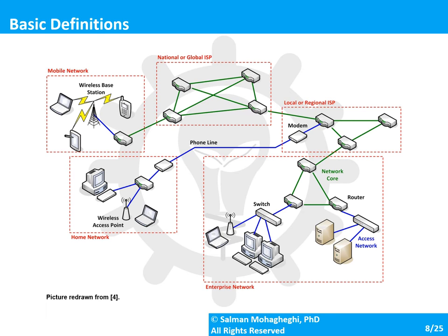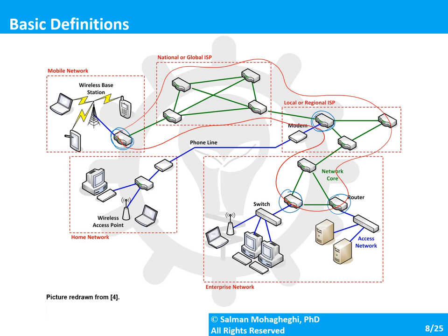Looking at an example of an interconnected network: the green lines represent the core network, each with an edge router at its boundary. The blue lines represent access networks connecting customer premises to the core network. Examples include a home network with a desktop and laptop, enterprise networks with multiple desktops and servers, and mobile networks with devices connected through a wireless base station.